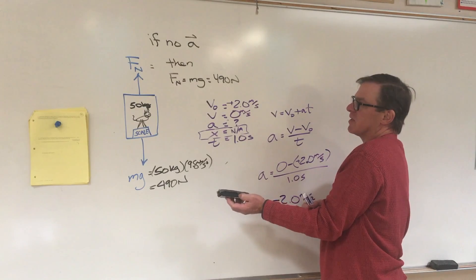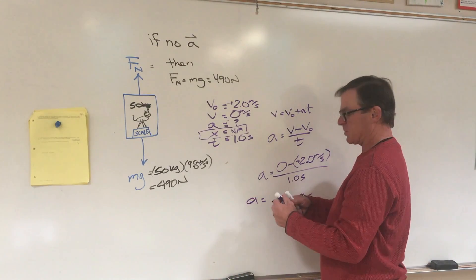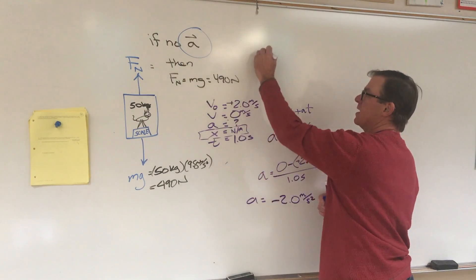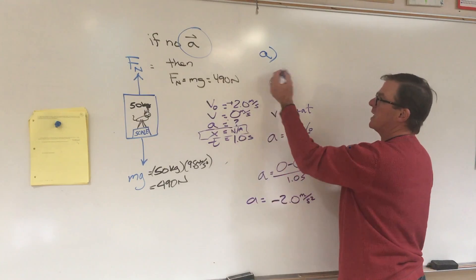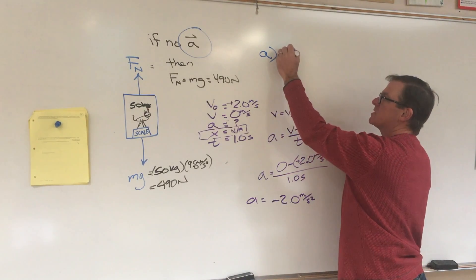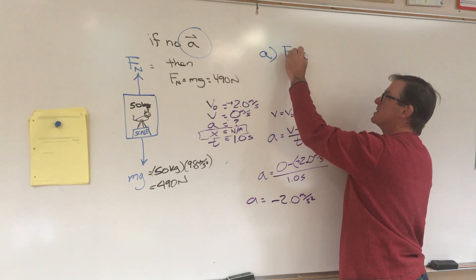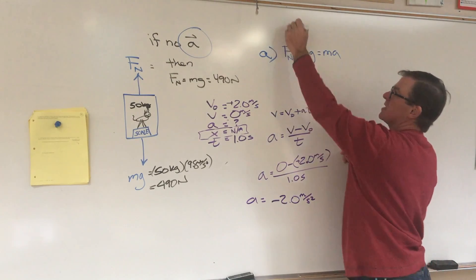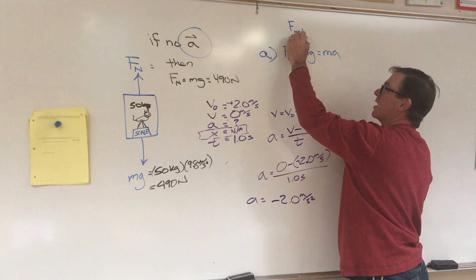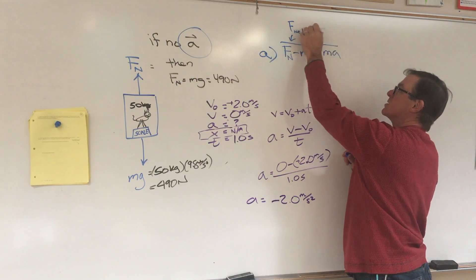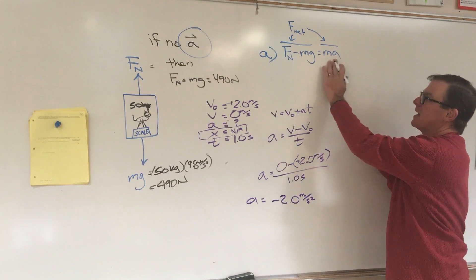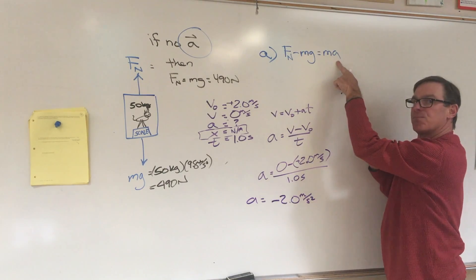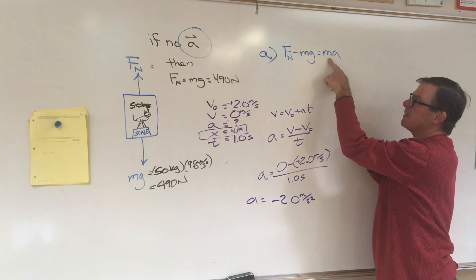Well while it's traveling at a constant velocity of 2 meters per second upward, there's no acceleration. So for part A, the reading on the scale is 490. Now if you want to use an equation to get there, you would say up minus down equals MA, because this is the net force. F net is MA, and F net is up minus down.